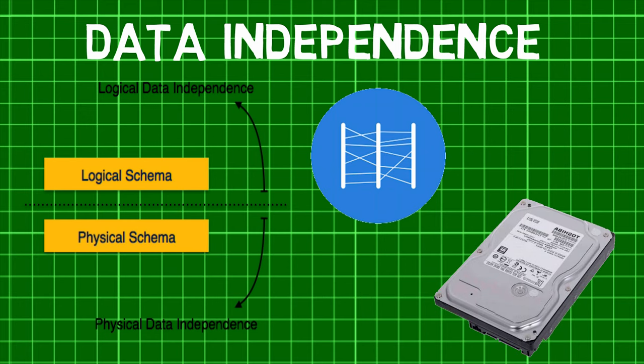Second is Physical Data Independence, which is the ability to change the physical schema without changing the logical schema. For example, a change to the internal schema such as using different file organization, storage structures, or storage devices should be possible without having to change the conceptual or external schemas.